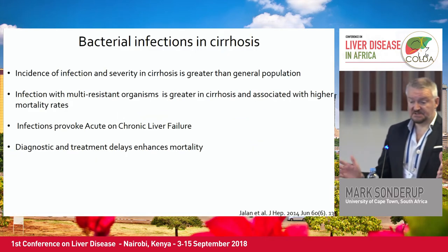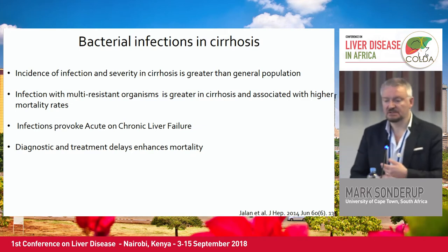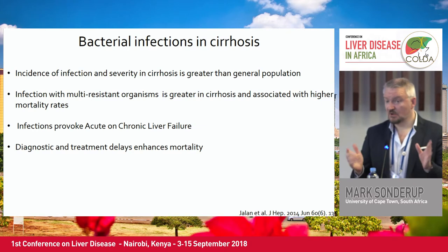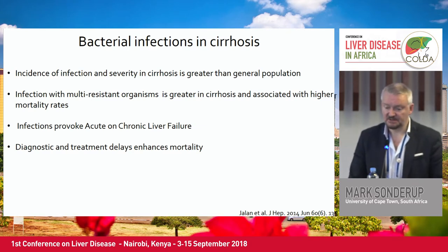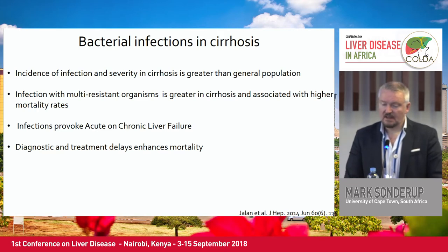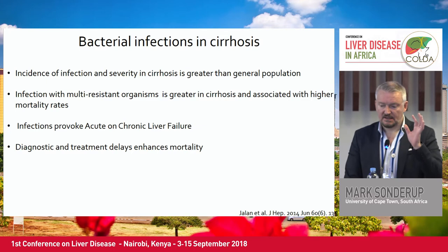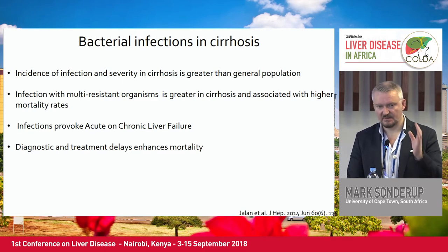Bacterial infections in cirrhosis: the incidence of infection is very high, much higher than the general population. Multi-resistant organisms are a big problem and should always be taken into consideration when using antibiotic therapy. Infections are a major promoter of acute and chronic liver decompensation. Most importantly, diagnostic and treatment delays enhance mortality. So if your patient comes in having a bleed, start antimicrobial therapy. If you think they've got SBP, start antimicrobial therapy.